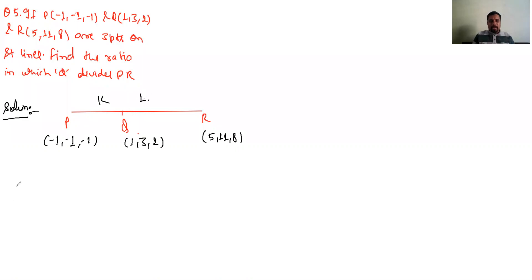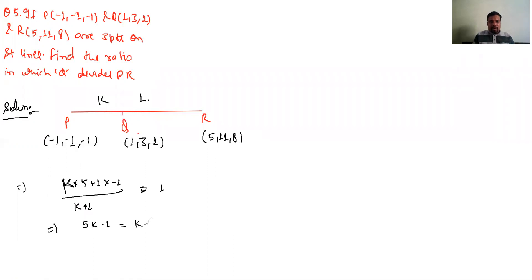K:1 ka ratio le lenge. To ban jayega: (k×5 + 1×(-1)) / (k+1) = 1. To bana 5k - 1 = k + 1, 4k = 2, k = 1/2.